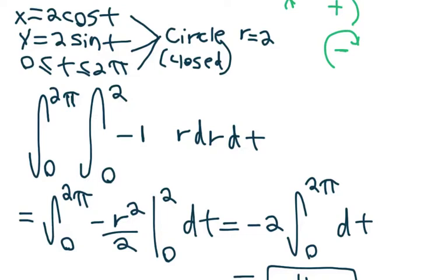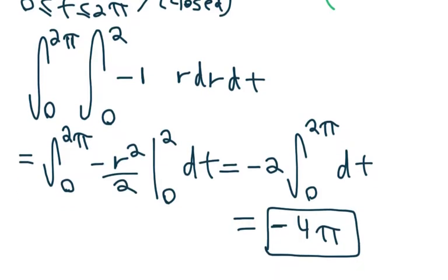And θ, which in this case is just t in this question, from 0 to 2π, but it's the same thing as we did before with θ. If we do the double integral of 0 to 2π, 0 to 2, minus 1 r dr dt, it simply gives us minus 4π.